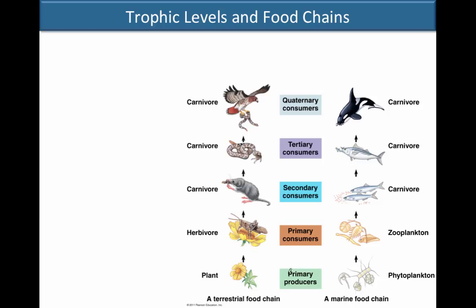Let's define a few terms. Primary producers are your autotrophs at the very bottom of the food chain — organisms that make their own carbon structures by bringing in CO2. Everything else is a consumer. Primary consumers eat the primary producers. Secondary consumers eat the primary consumers — so this rat is eating the grasshopper, and the energy from the grasshopper is transferred to the rat. The secondary consumer is then eaten by the tertiary consumer — this snake eats the rat — and finally this hawk eats the snake, so energy moves from the snake to the hawk.